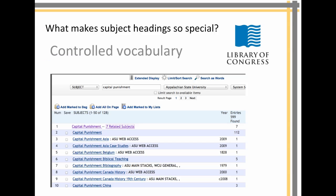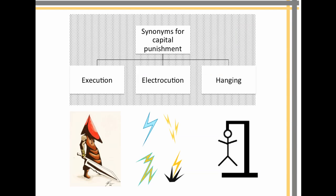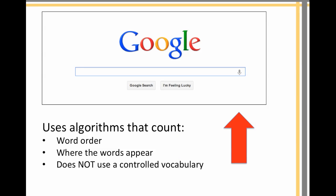What makes subject headings so special? They're assigned by humans using a controlled vocabulary — the Library of Congress subject headings are an example. In practice, this means you don't have to know every synonym that might be used for the death penalty, like execution, electrocution, or hanging. And humans haven't thoughtfully assigned subject headings to everything on the internet — in fact, the internet does not have subject headings. That's a big difference between doing subject searches in a library database and an internet search.